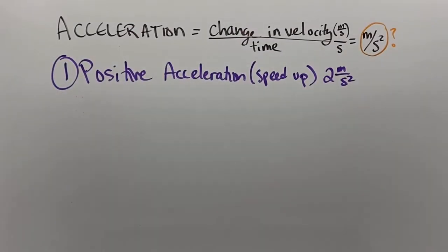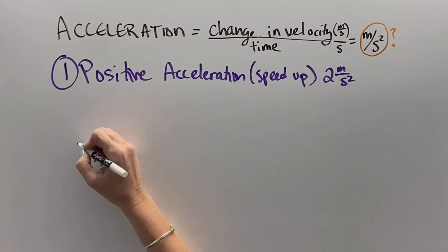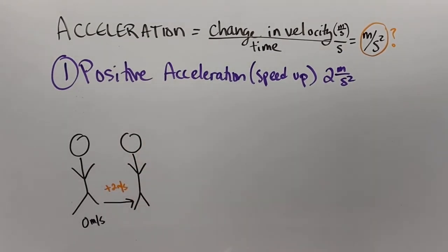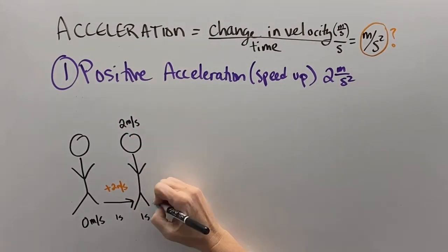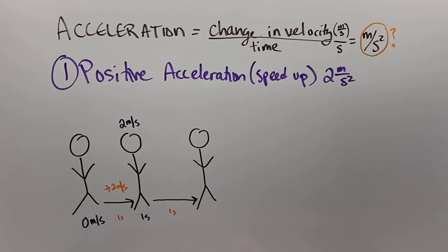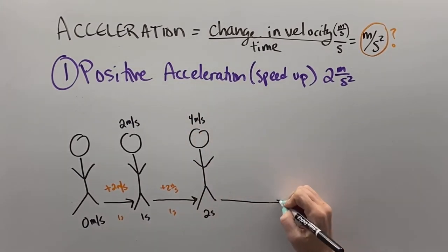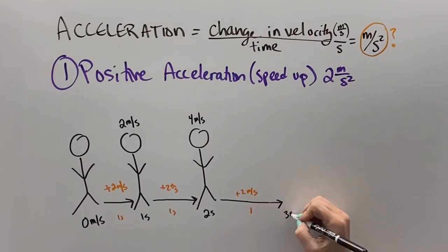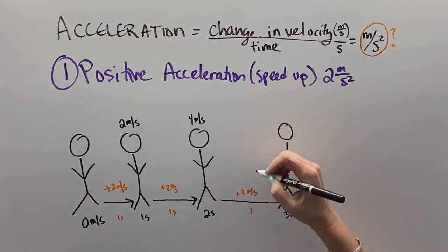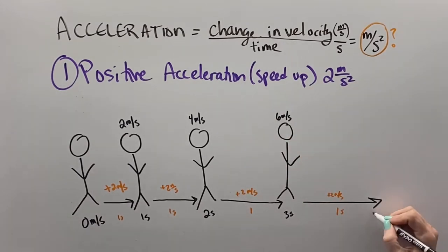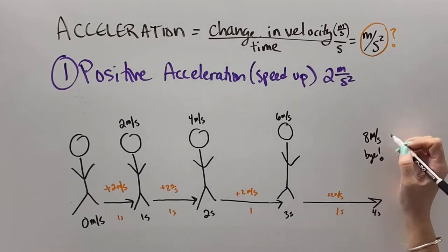If we look at a positive acceleration of two meters per second squared, we would start out at zero meters per second. After one second, we would increase our speed by two meters per second, so we would be going two meters per second. After another second, we would be going four meters per second, then six meters per second, then eight meters per second. That acceleration means you're going to increase your speed by that many meters per second each second.